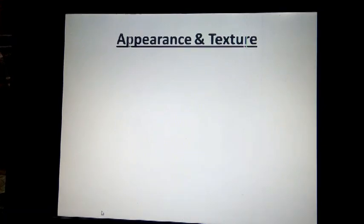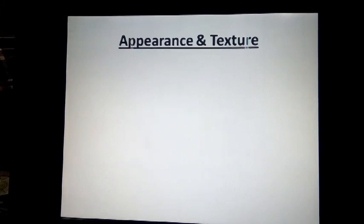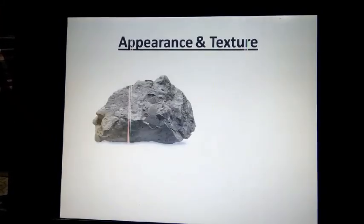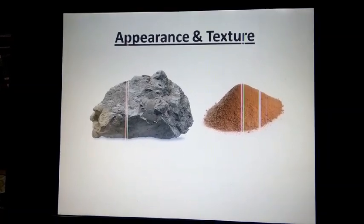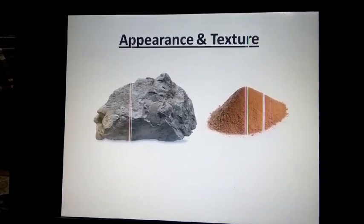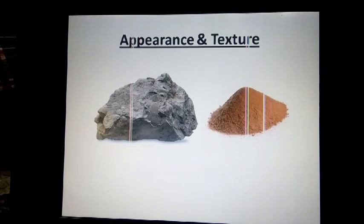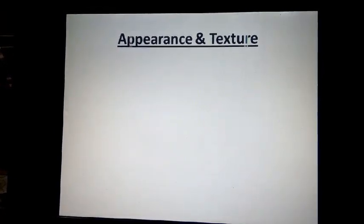When we touch different materials, we find that some are rough and some are smooth. Rough materials like stone, like sand, they have bumps and ridges on their surfaces which can be felt, and hence they are called rough materials.